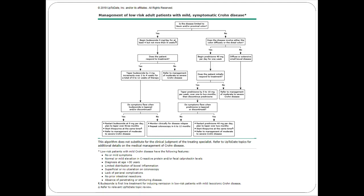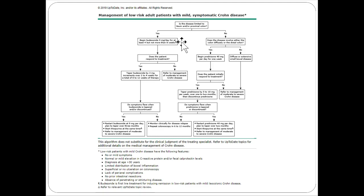For patients with low-risk, mild symptomatic Crohn's disease, the first question is whether the disease is limited to the ileum or proximal colon. If yes, you can start with topical steroids — specifically budesonide, which doesn't absorb out of the GI tract, so you get the anti-inflammatory effect directly at the site without systemic steroid side effects. If the disease involves the colon more diffusely or the distal colon, you use prednisone 40 mg.